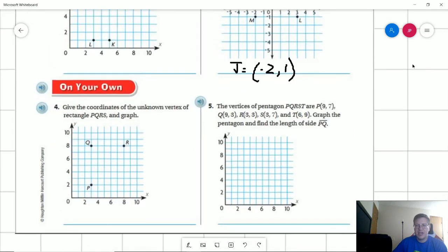Number 5. So we have 1, 2, 3, 4, 5 different points for a pentagon. And we want to find the length of one of the sides. So again, if you need to pause the video to go ahead and work on getting your points plotted in, you can do that. I'm not going to label all of these.